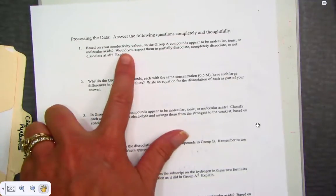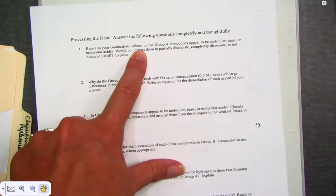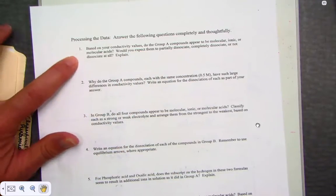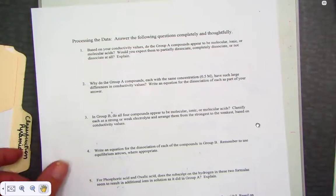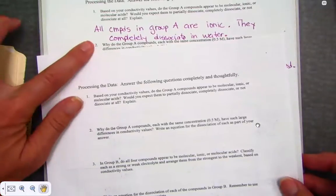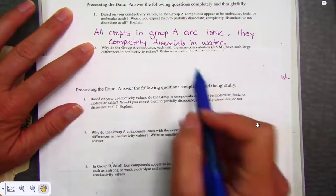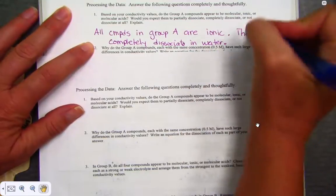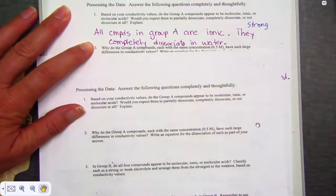Number one, based on your conductivity values, do group A compounds appear to be molecular, ionic or molecular acids? And would you expect them to be partially dissociated, completely dissociate or not dissociated at all? Well, we've commented on that already and I'll just put my answer here. We said that these compounds in group A are indeed ionic. They completely dissociate in water. That's the very definition of a strong electrolyte, 100% dissociate.